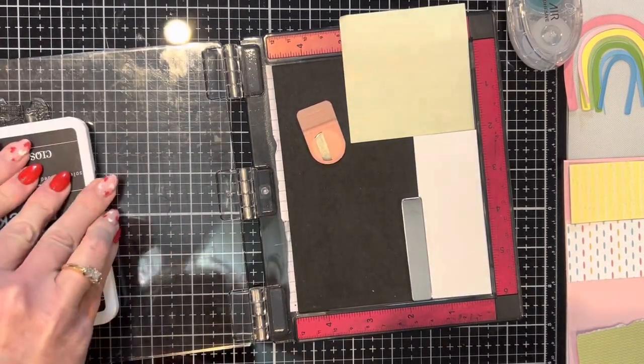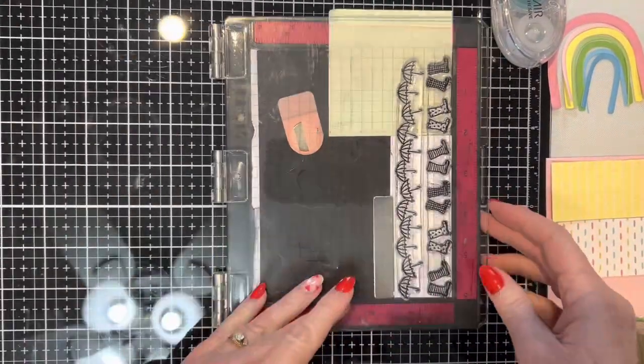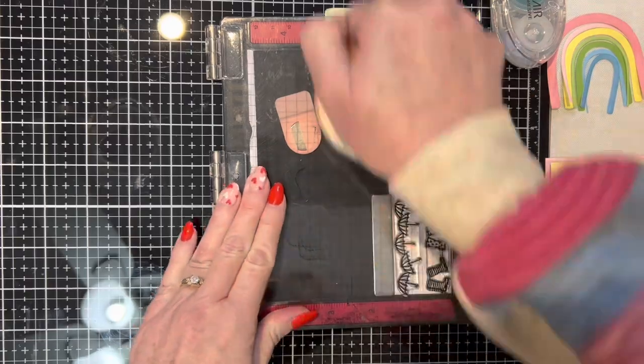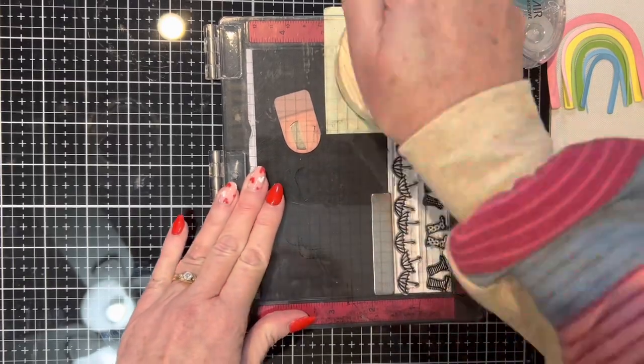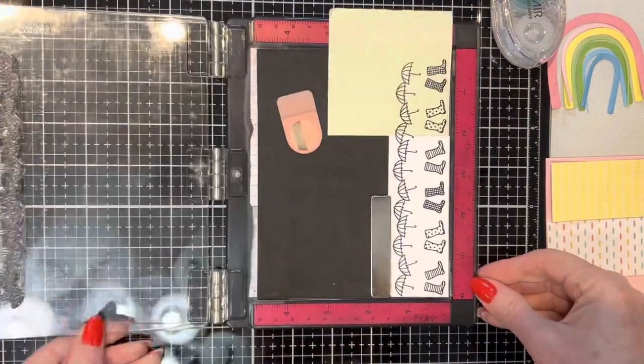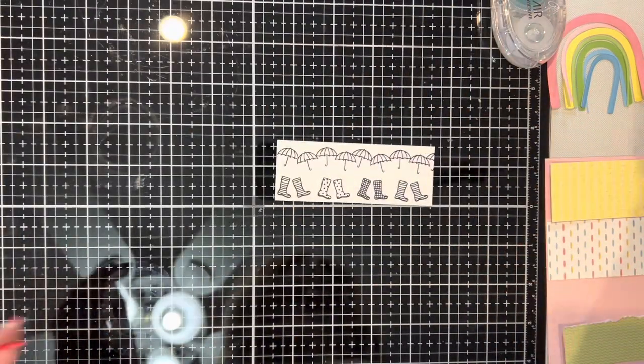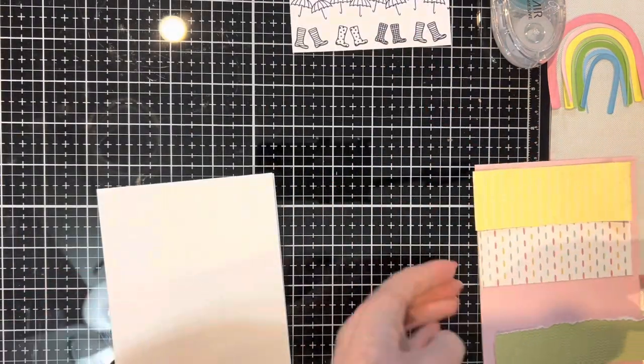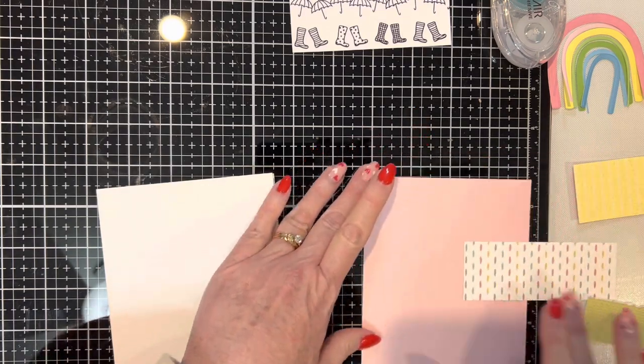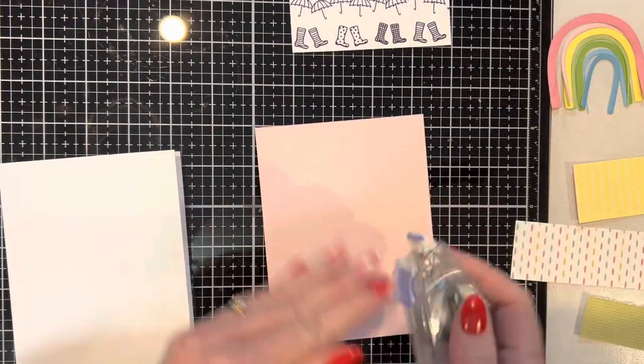The first thing I am doing is on a white daisy piece of cardstock, I am stamping the little row of galoshes or boots and umbrellas, and I wanted to stamp that first in archival ink so that it could sit a little bit while I worked on these other pieces.